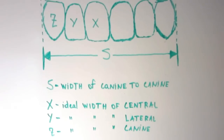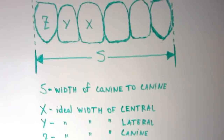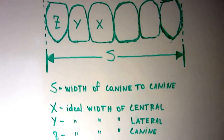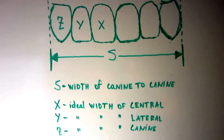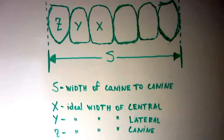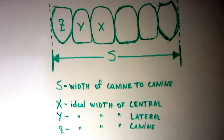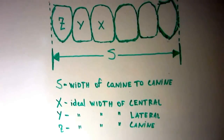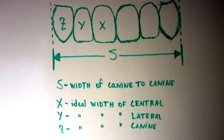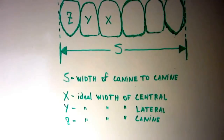Hey guys, I just wanted to make a quick video, very simple, very straight to the point, on how to figure out the ideal length of your central, lateral, and canine teeth based on the amount of space that you have.